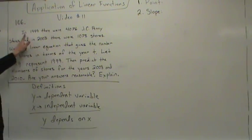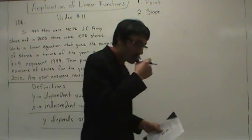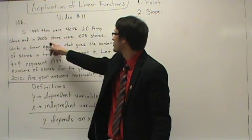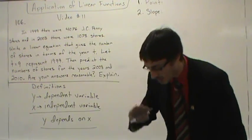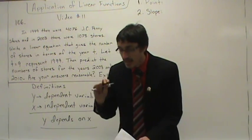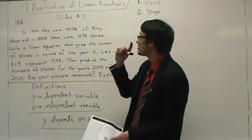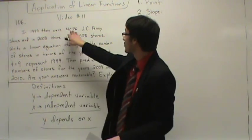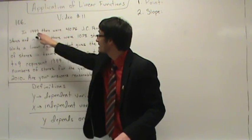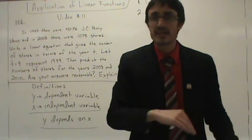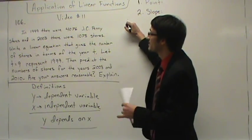In 1999 there were 4,076 stores, and in 2003 there were only 1,078 stores. So if you think for a moment — what's happening to the stores? There were more stores in 1999 than in 2003, so the stores are going down. The number of stores are going down. That would be an example of negative correlation — as X increases, Y decreases. The trend is downward; this is negative slope.